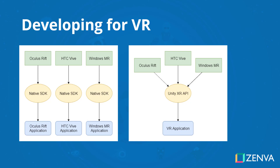That is what we're going to be doing in this course with the Zenva VR library — a VR library made here at Zenva using the Unity XR API. We'll be downloading it and then pretty much doing drag and drop components and prefabs to quickly put together a VR application we can run on our specific device. Thanks for watching, and I'll see you in the next lesson where we start to actually develop our VR project.